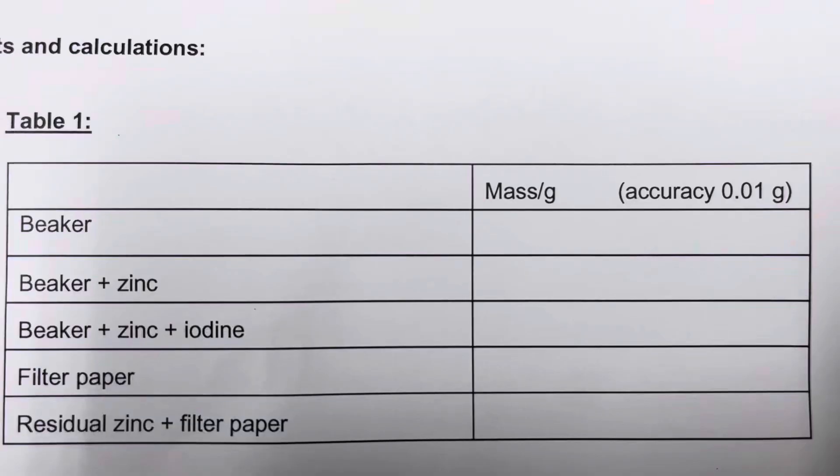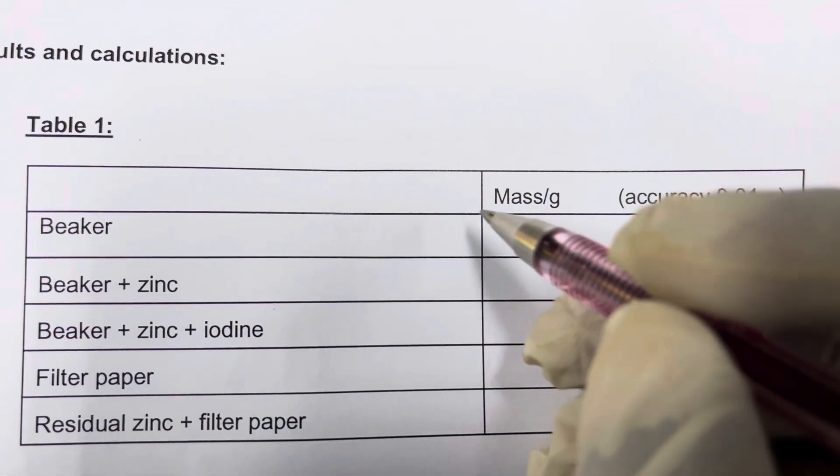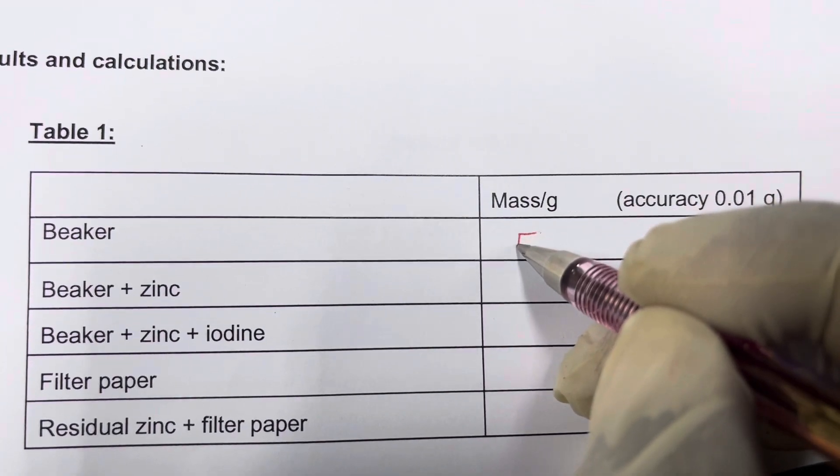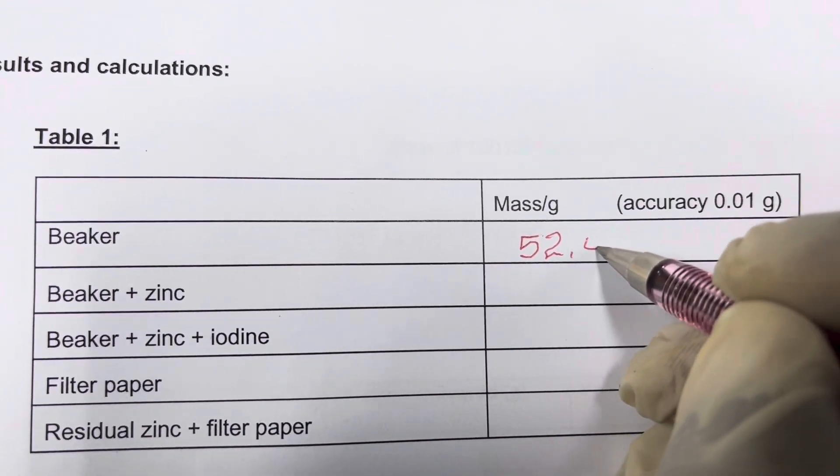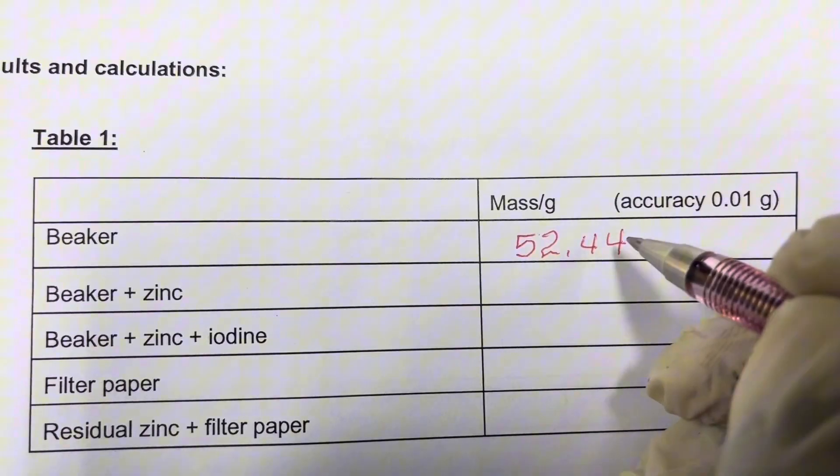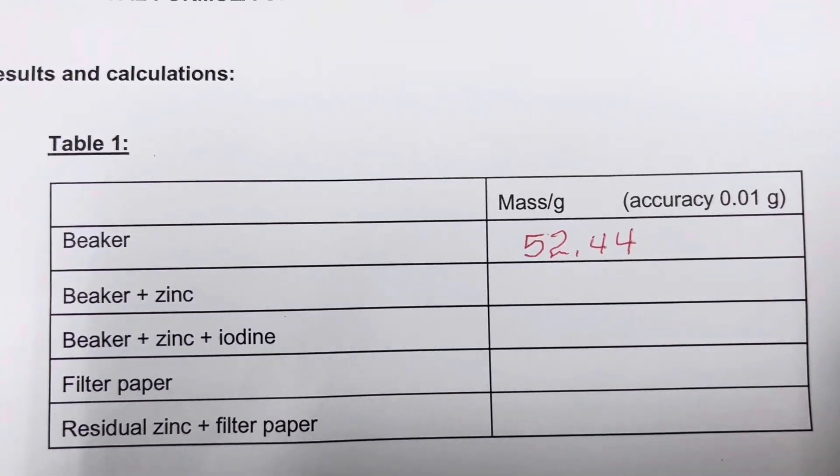Let me record on the table. This is my table. I'm going to record that value, which is 52.44 grams. That's the mass of the beaker alone.